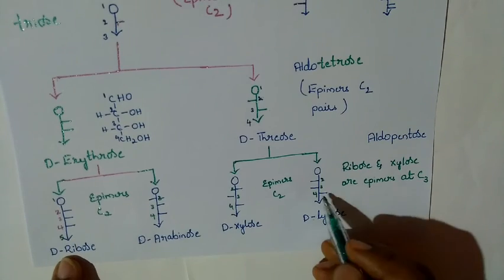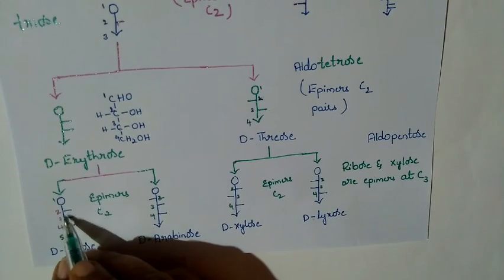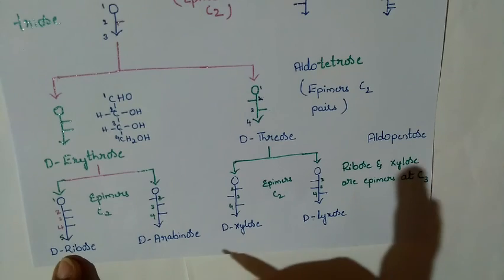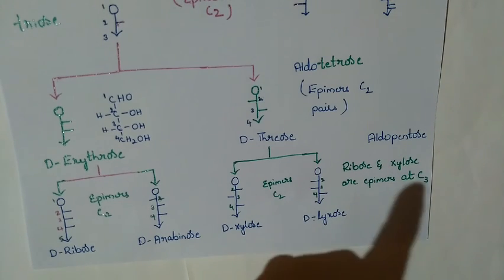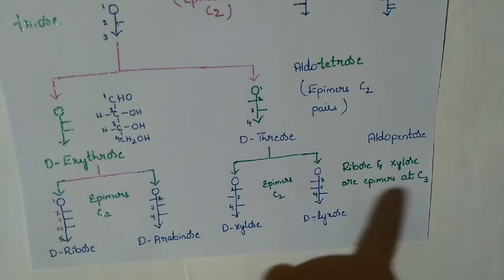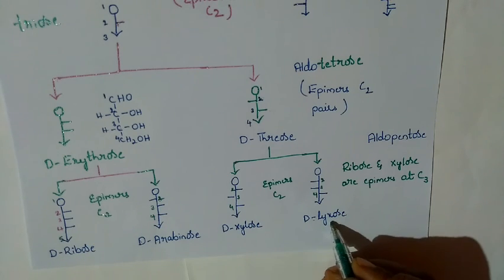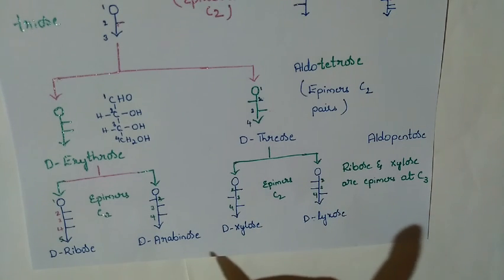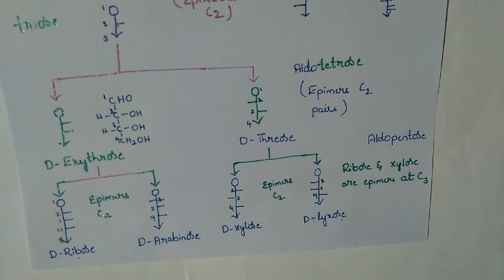D-ribose and D-lyxose: checking positions 2, 3, and 4 — position 4 is the same, but positions 2 and 3 are both different (right side in ribose, left side in lyxose). They differ by two carbon atoms, so we cannot call D-ribose and D-lyxose epimers. They are diastereomers — they have more than one stereocenter and are not mirror images — but they differ at two carbons, so they are not epimers. We shall continue in the next class.